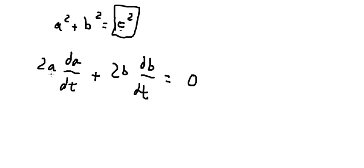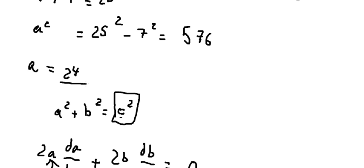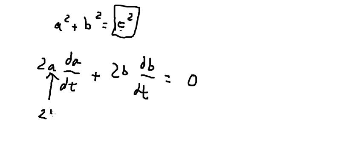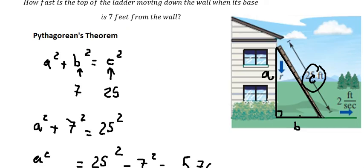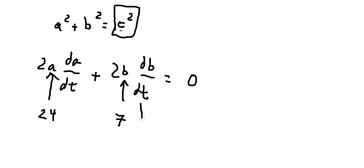We know that A is 24, B is 7, and dB/dt is 2, which they provided. The question wants to find this, dA/dt.